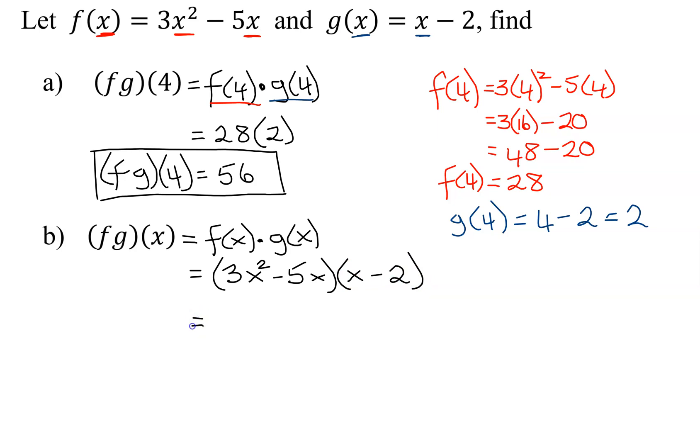So now all I have to do is work this out. I have two binomials multiplied by each other. How do you do that? FOIL. First, 3x² times x is 3x³. Outer, 3x² times negative 2 is negative 6x². Negative 5x times x is negative 5x². And last, negative 5x times negative 2 is positive 10x.